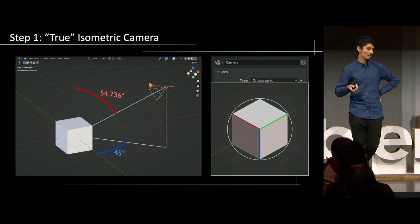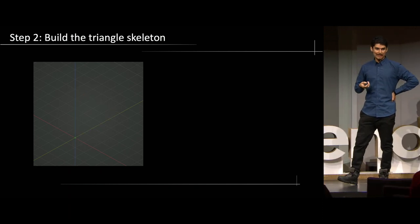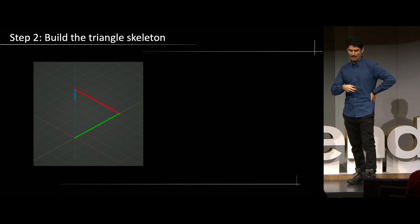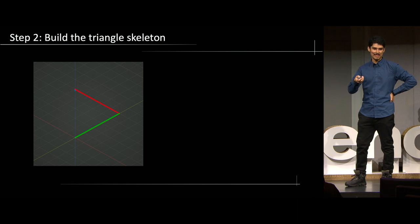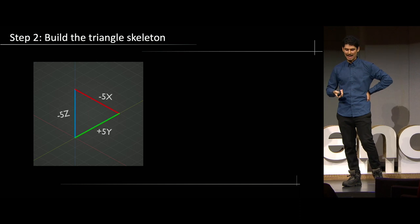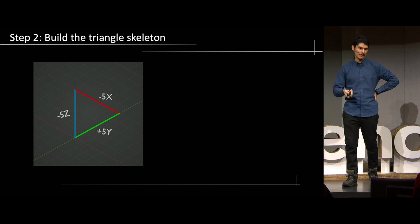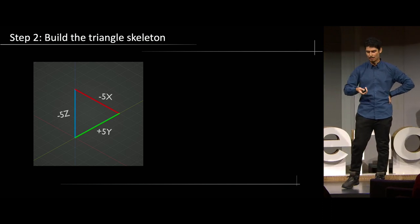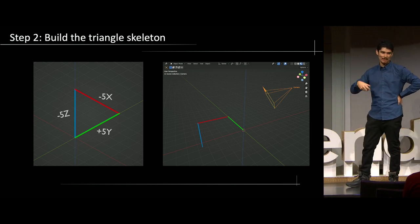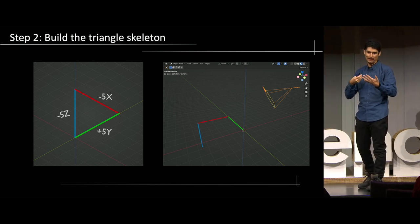With that property, you can actually build a skeleton for your impossible figure. You can move in the y-axis, then in the x-axis, and then in the z-axis, and go back to the origin from the camera view. In this example, I move 5 units y, minus 5 units x, minus 5 units z, and I went back to the starting point. But in the 3D viewport, we see that the starting and end point are actually very far from each other. So we are playing with the perception of depth of the viewer.